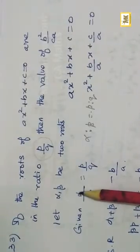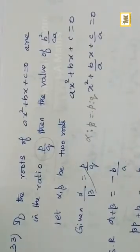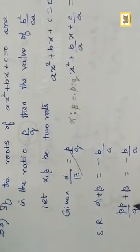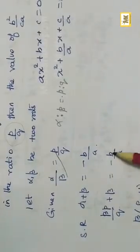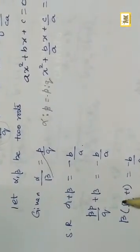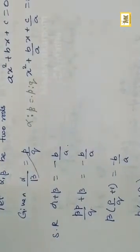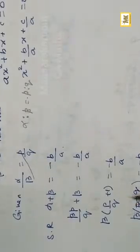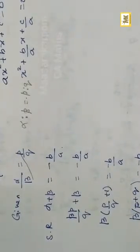From the sum condition, substitute alpha = (p/q)·beta: beta·(p+q)/q = -b/a. We need to find the value of b²/ca.